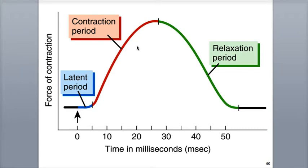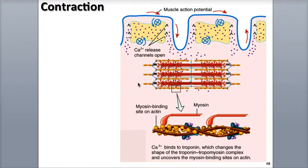The contraction period, shown here in red, occurs next, with the muscle fiber generating its strongest force of contraction. This phase lasts between 10 and 100 milliseconds, with the time varying depending on the type of muscle fiber, be it slow twitch or fast twitch.